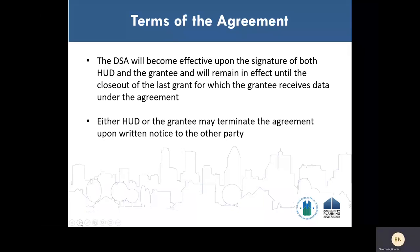The data sharing agreement is effective after both the grantee and HUD sign the agreement, and it remains in effect until closeout of the last grant for which a grantee receives data under the data sharing agreement. Either HUD or the grantee can terminate the agreement earlier than the grant closeout date by providing written notice to the other party. However, termination of the agreement does not absolve the grantee from any responsibilities outlined in the data sharing agreement, unless the grantee has returned the data to HUD or destroyed the data. Section 13 of the data sharing agreement goes into further detail on the responsibilities of the grantee, and grantees are encouraged to read the details in that section.